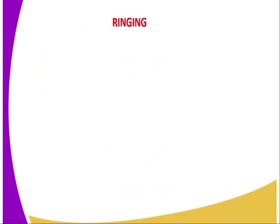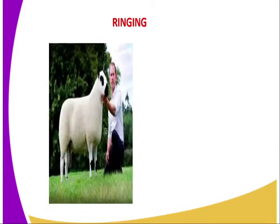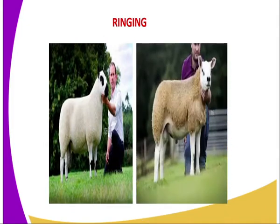We go to the second one, that is Ringing. Ringing refers to the trimming of the hair around the male reproductive system of a male sheep. You can see a male sheep here, and the one where ringing has been done.